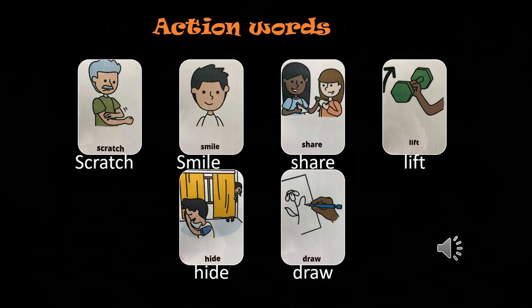Slide 17: action words. For this month I only put out six: scratch ('hikake'), smile ('niko niko suru'), share, lift ('mochi agaru'), hide ('kakureru'), draw ('eokaku'). Get your students to pantomime these words, or you can play Simon Says. At the end of the month, for a test, hide all the words and call them out randomly — for example 'scratch' — and students should do the scratch motion.